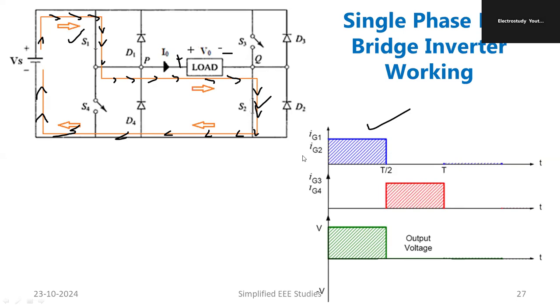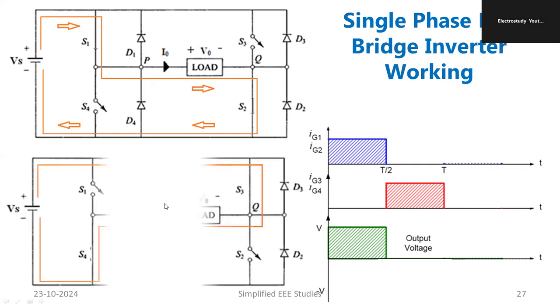Now, we'll be turning on, let me clear all the drawings. Now, we are going to turn on switches S3 and S4 simultaneously. What will happen whenever S3 and S4 turn on simultaneously? S1 and S2 should be off. Now check it. Kindly verify the second diagram. The second diagram shows that S4 and S3 will be turned on by providing the gating pulse.